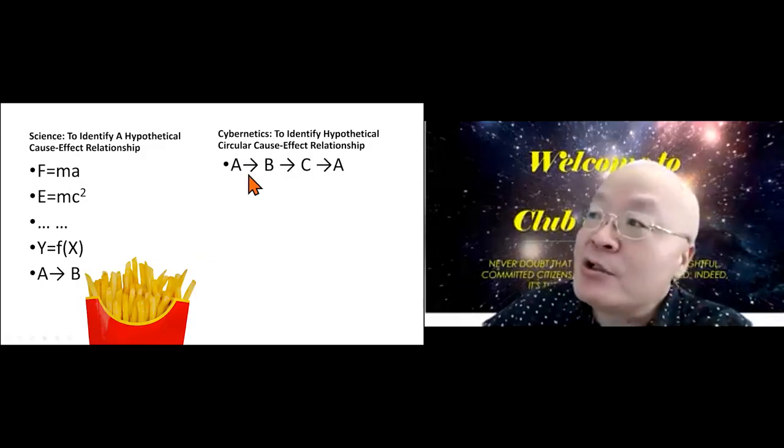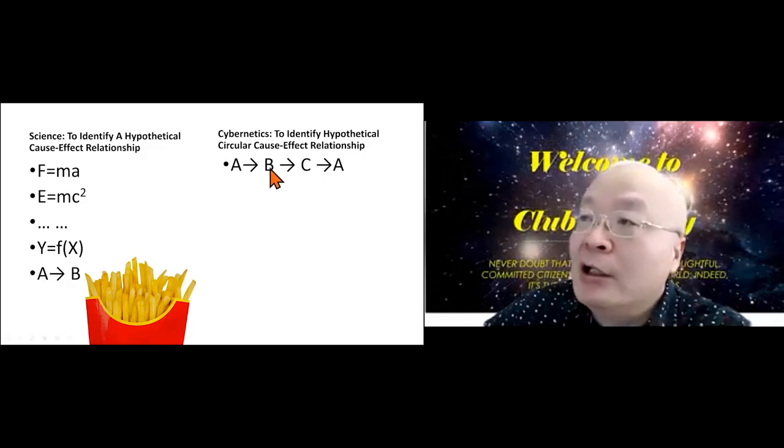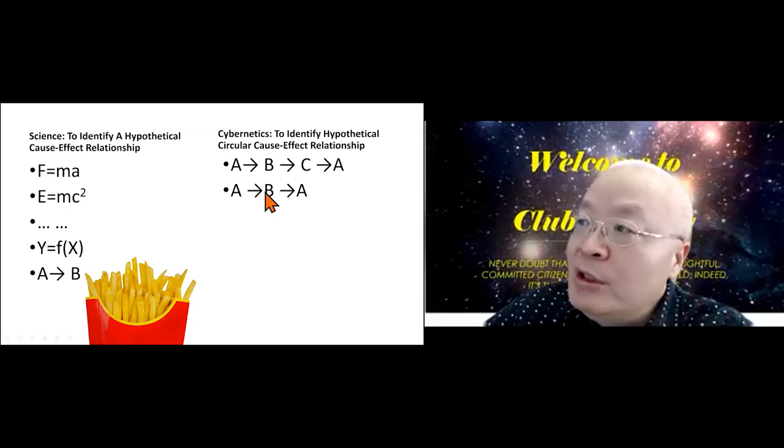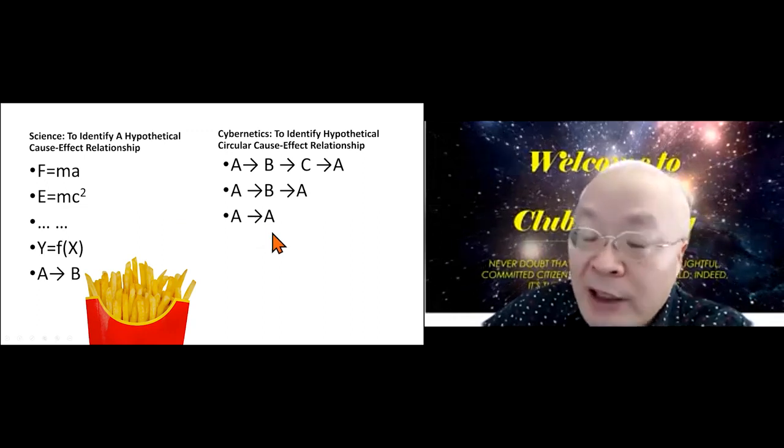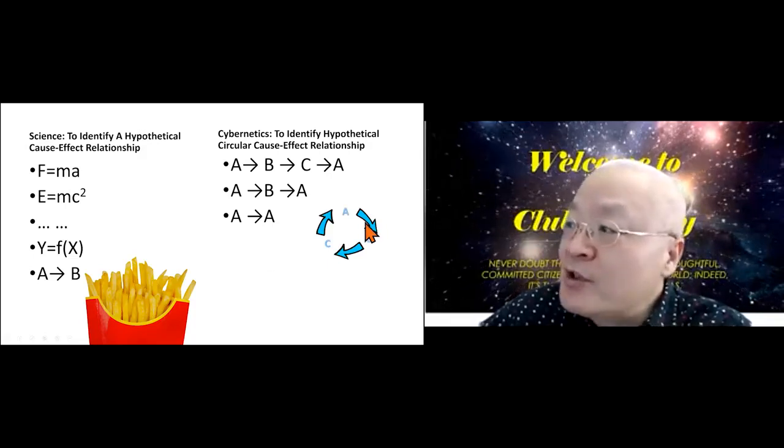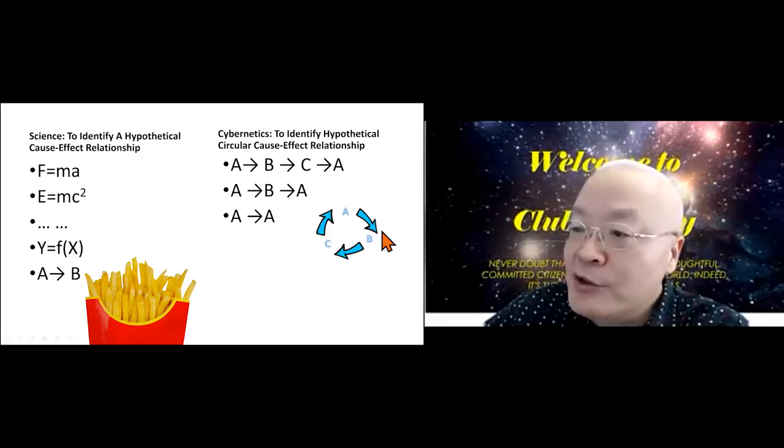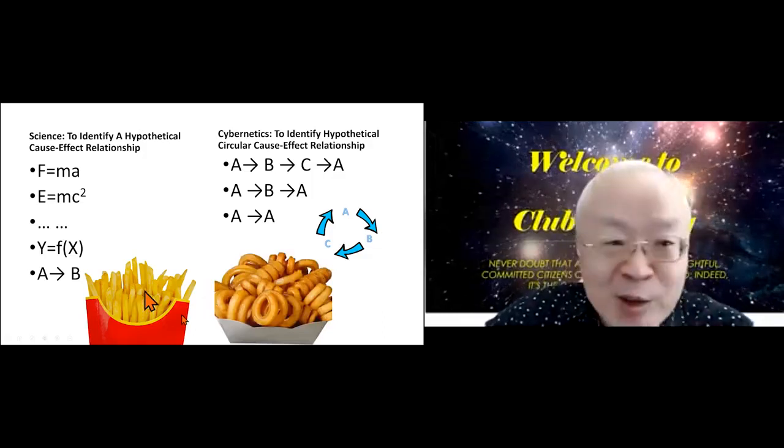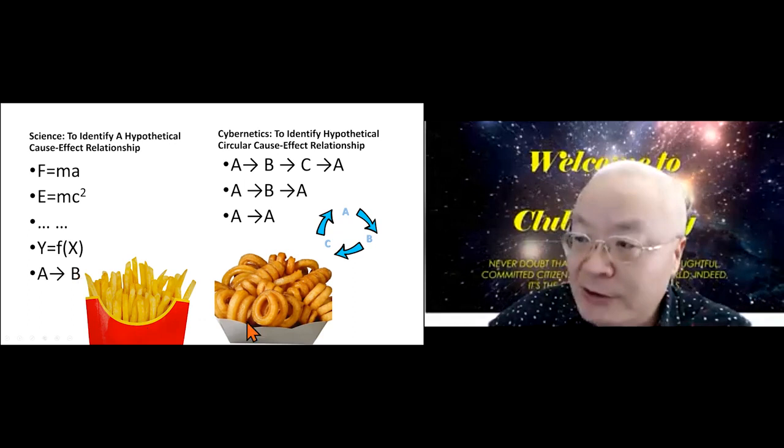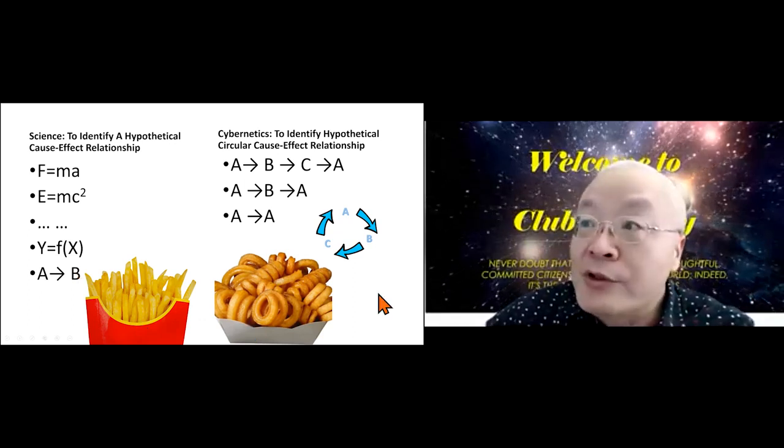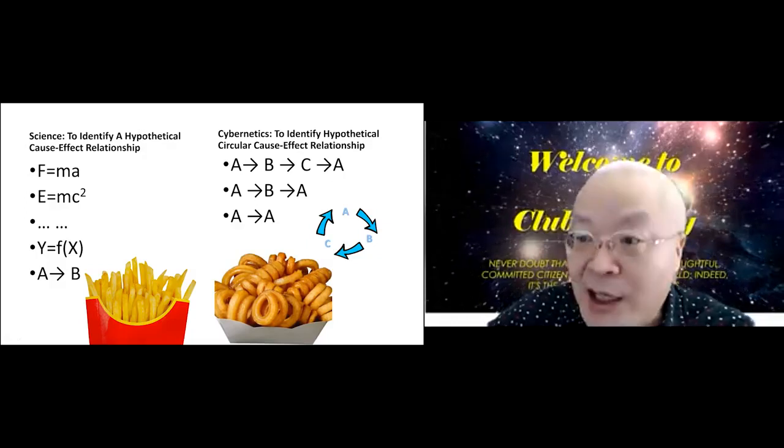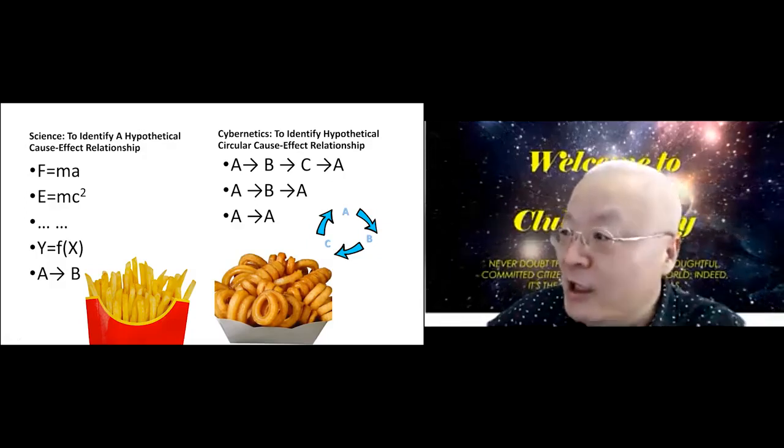But in cybernetics, the difference is you have a circle going back to A. A causes B causes C and then causes A, or A to B to A, or A to itself. The difference is that you have got a cycling going on here. They are all potatoes, it's just the difference is straightforward or circular. I can say that they are actually the same thing, it's just to have this new feature.